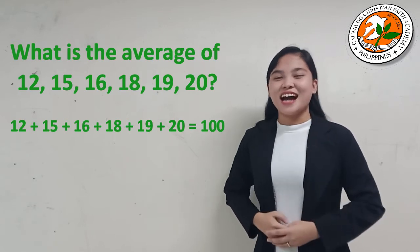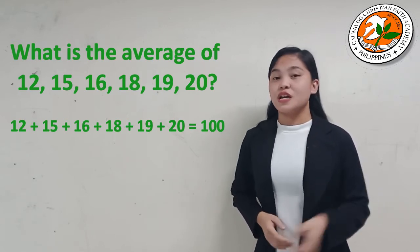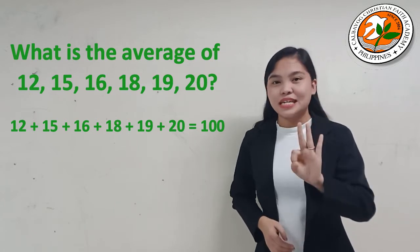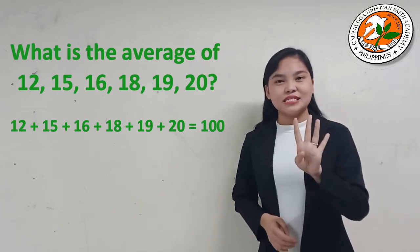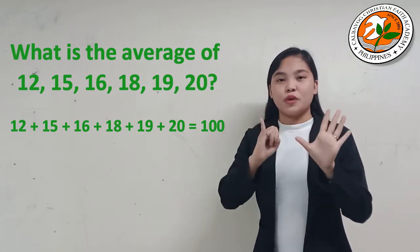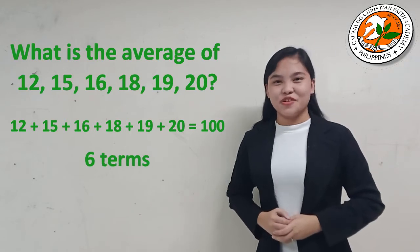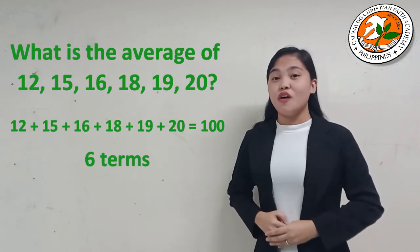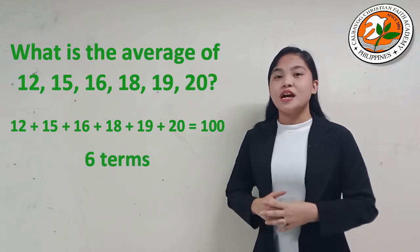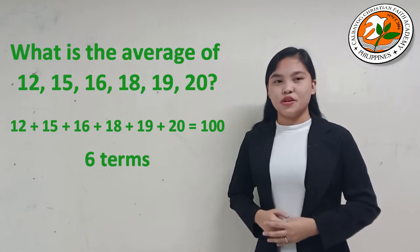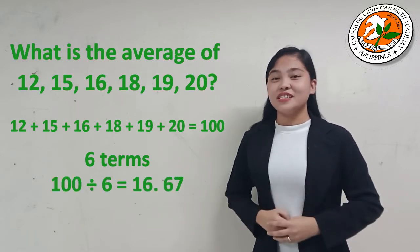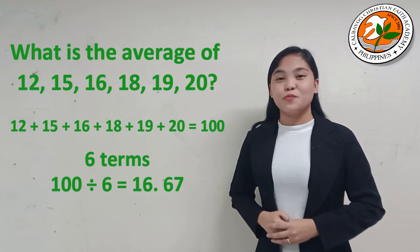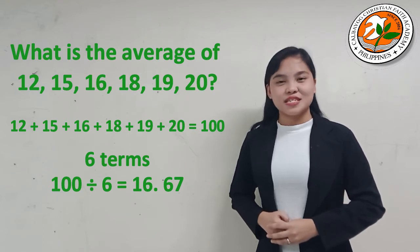Second, count all the terms. So let's count 12, 15, 16, 18, 19, and 20 — we have 6 terms. Third, divide the sum of the terms by the number of terms: 100 divided by 6 is equal to 16.67.